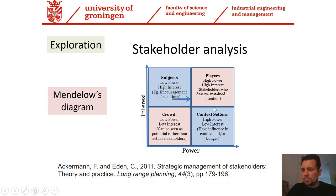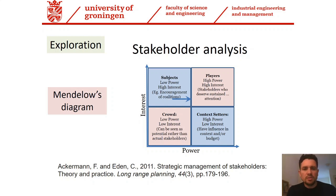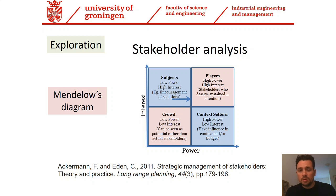For example, if you are solving a bottleneck in the production line, the problem owner is most probably the production manager — they have high decision power and high interest in maximizing production efficiency. But also in the same organization, we have the CEO. The CEO may or may not have strong interest in the project, but certainly has power to decide whether to continue with the project. So the CEO becomes a context setter.